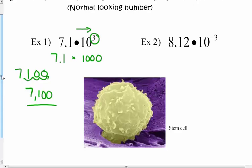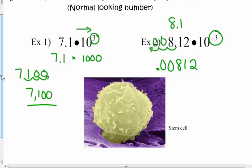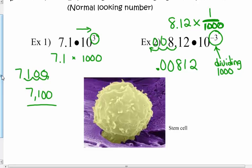Eight and twelve hundredths times ten to the negative third — the negative exponent tells me to move the decimal three places to the left. Fill in with zeros and you get 0.00812, which is eight hundred twelve hundred-thousandths in standard decimal form. This is the same as 8.12 times one one-thousandth — move it to the left, like dividing by a thousand. Negative exponent means move to the left; positive exponent means move to the right.